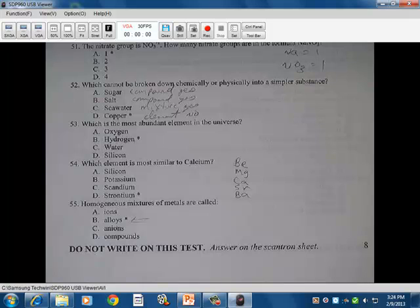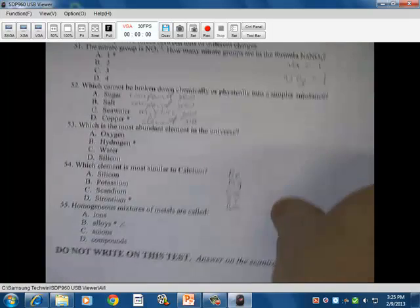And then a homogeneous mixture of metals are called an alloy. That's what I talked about earlier, steel. Steel is an alloy of iron and carbon together. So that's exam number one. And those are the answers to that exam. And if you have any more questions, we can talk about it at a later point.